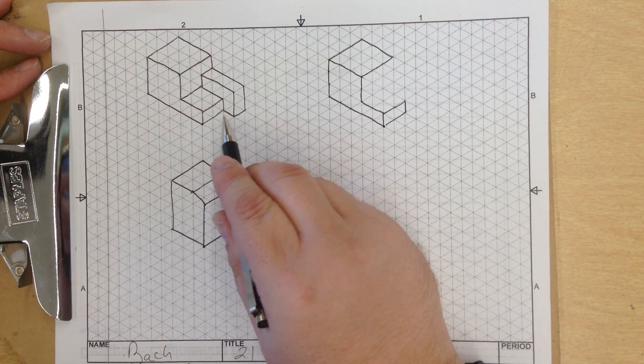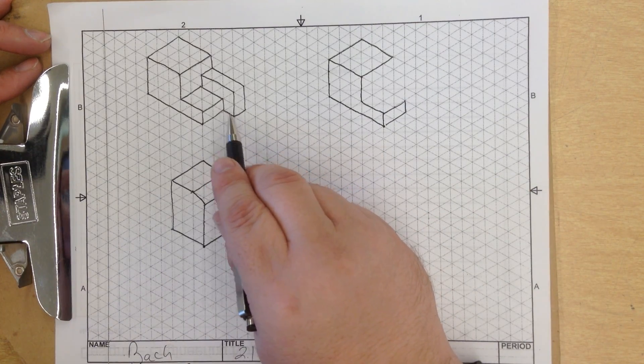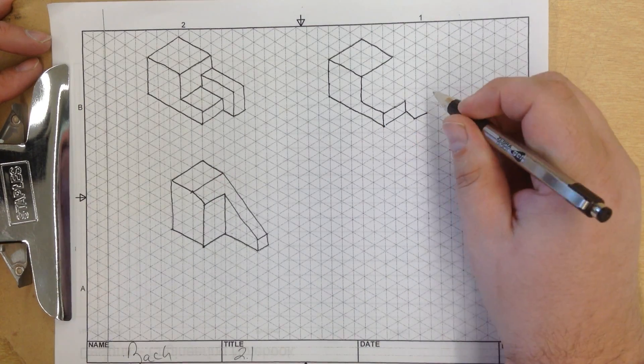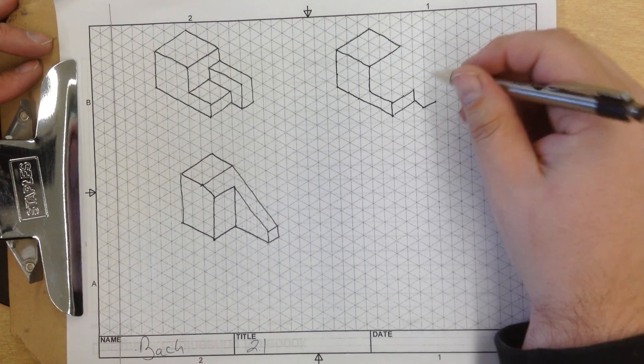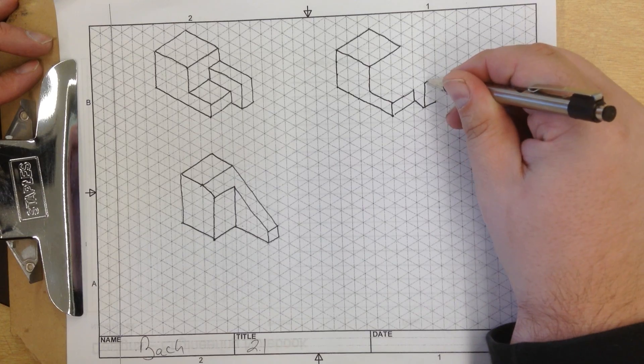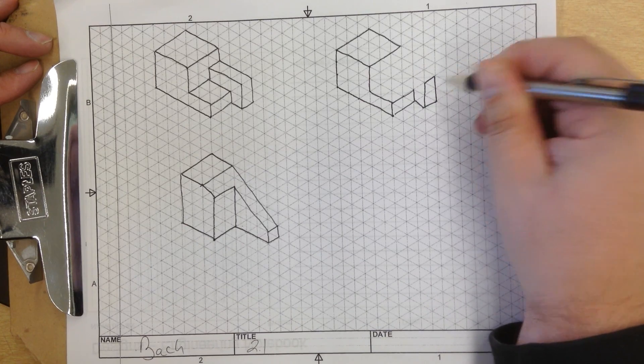If we check out this area, it comes 1 down, 1 over. So we go 1 down, 1 over. It goes 2 units up - 1, 2 - and we close the shape.